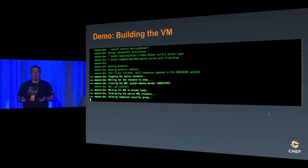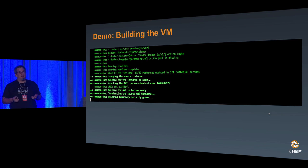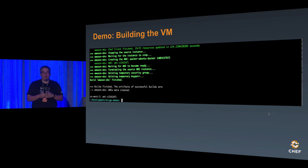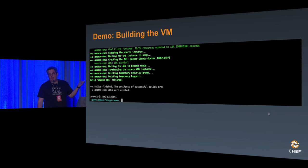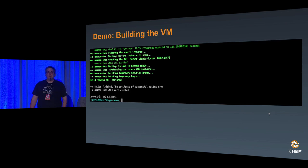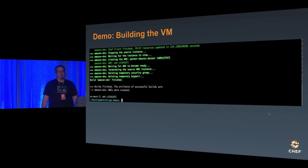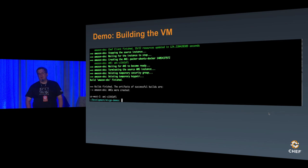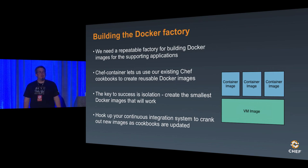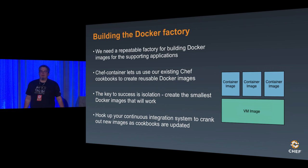With Packer you don't even need much other than your AWS credentials — it will create its own security groups and tear everything down when done. At the end, the build is finished and I've been given an AMI ID. I chose US West 2 to do the build because US East 1 was overcrowded with everybody else at Chef building stuff. Now that we've built the VM, we have an image for our core VM.